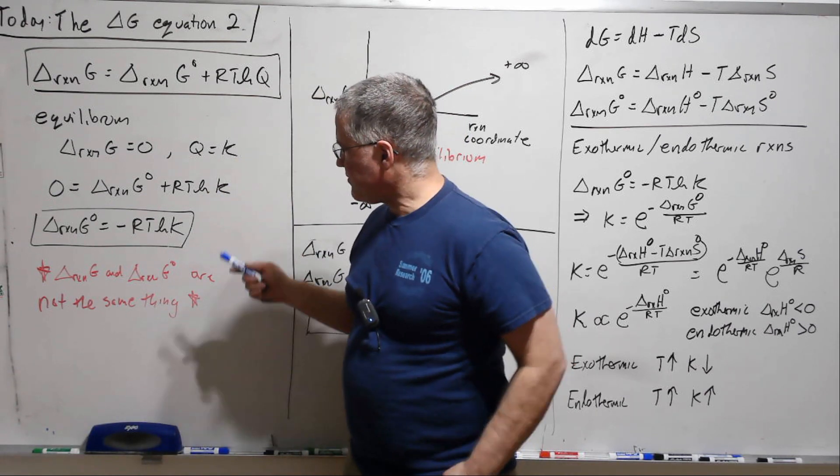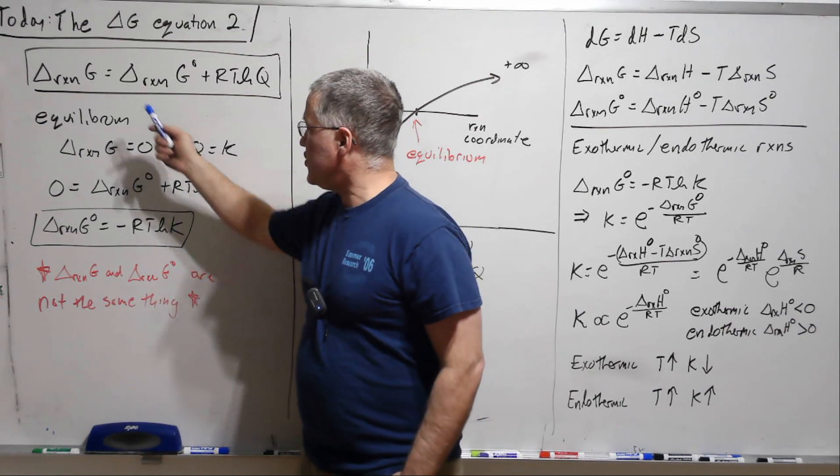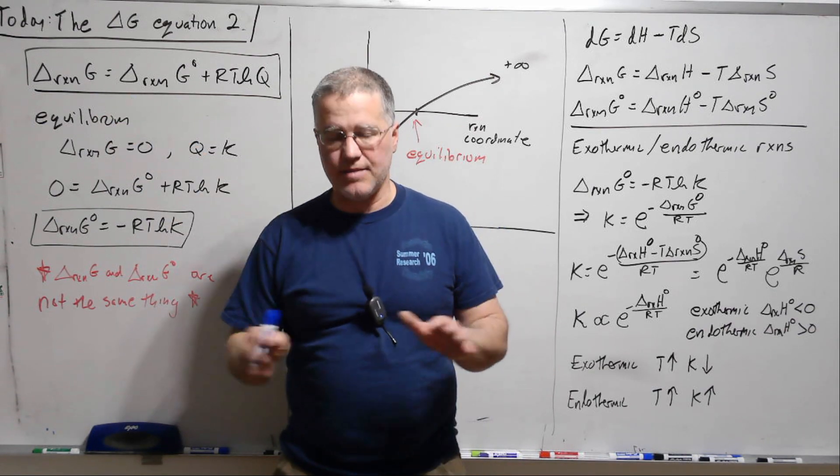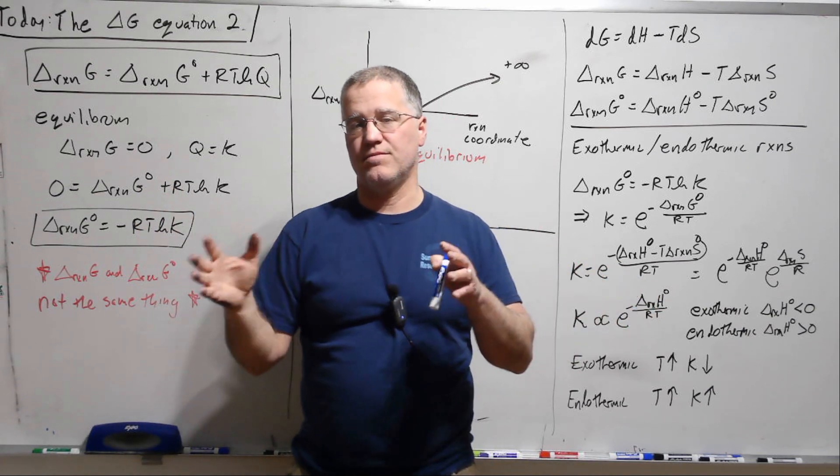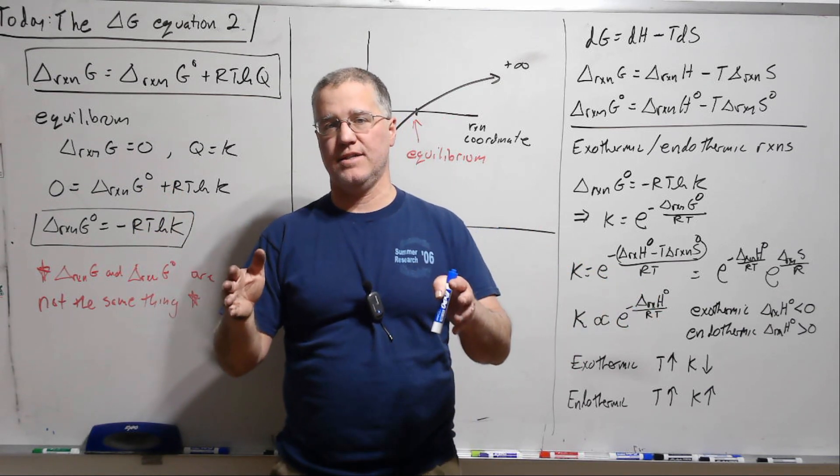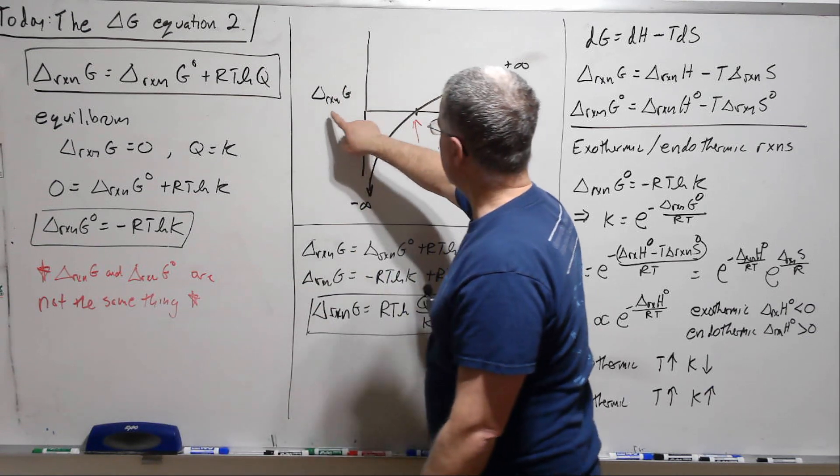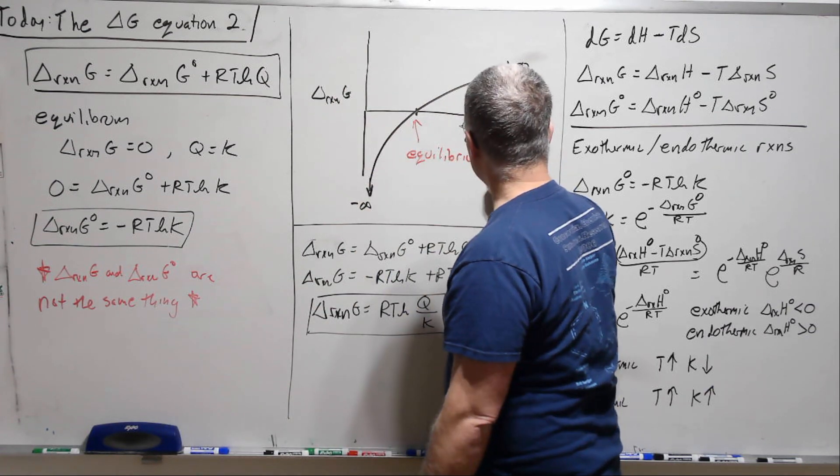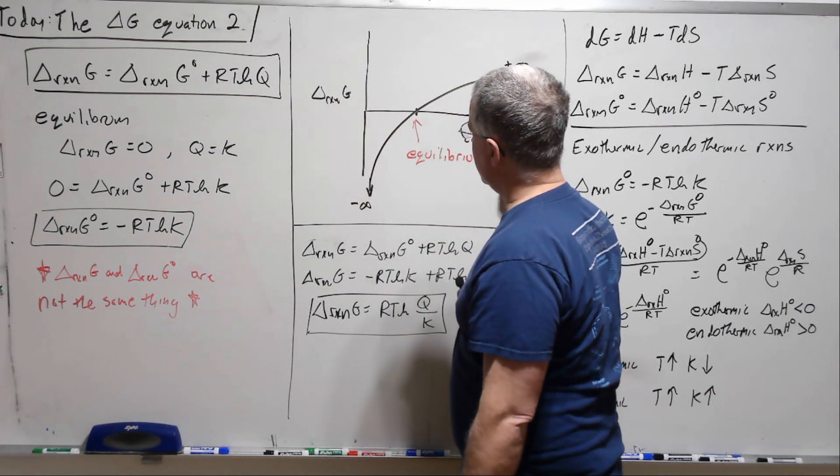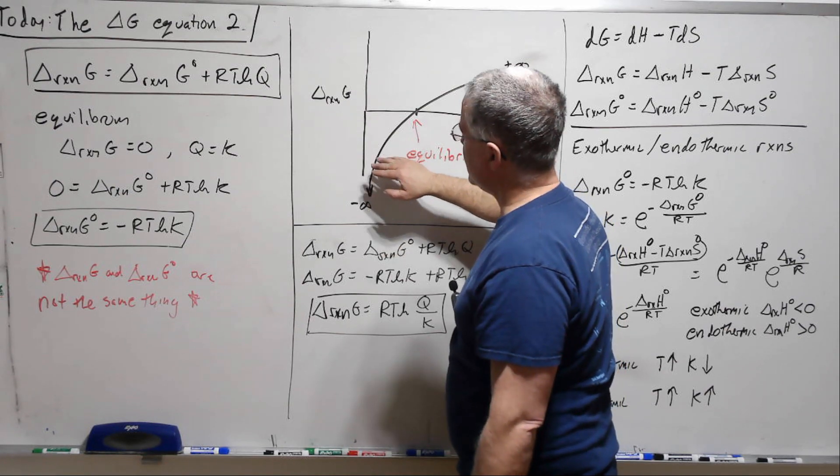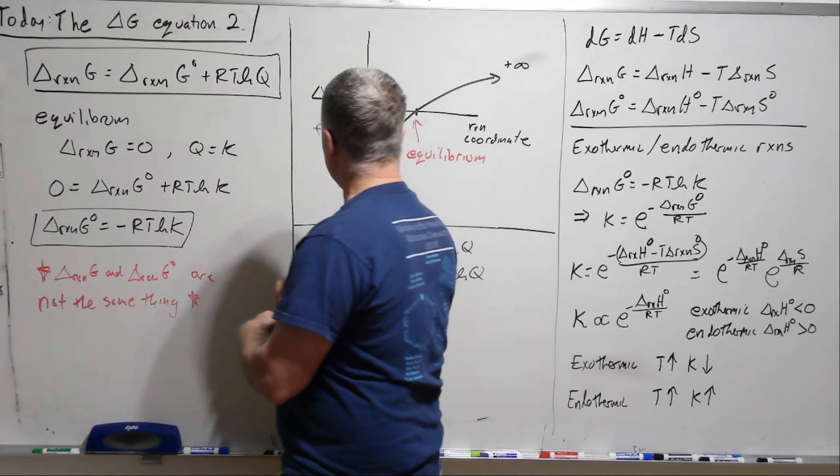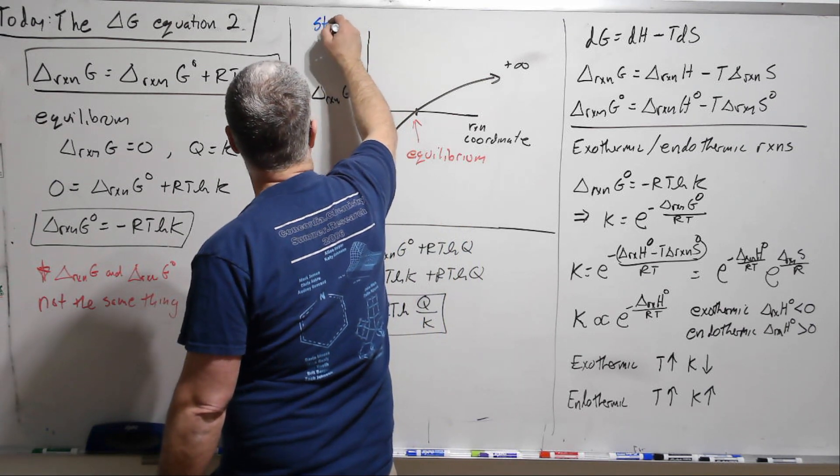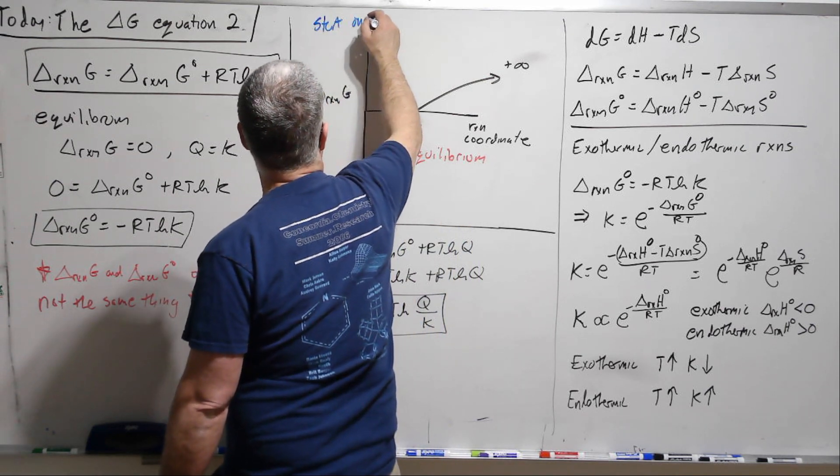Now Delta G, though everything's at the same temperature, this changes through the course of the reaction, so-called reaction coordinate. And so if we were to plot Delta G as a function of the reaction coordinate, let's start here with only reactants.